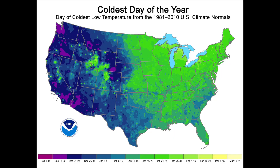This next map is pretty cool. Using data between 1981 and 2010, it shows us when the coldest day of the year is most likely to happen. For the most part, everything west of the Rockies seems to have its coldest part of the year in December, while other parts of the country seem to have it after December.